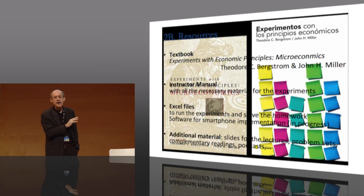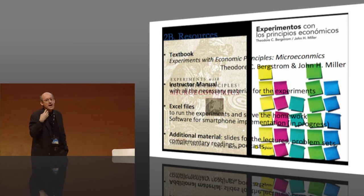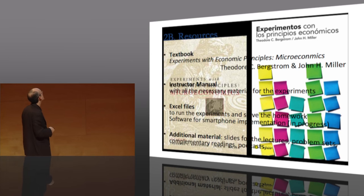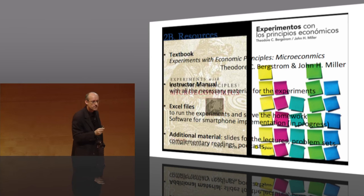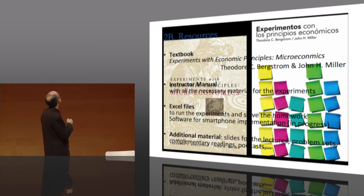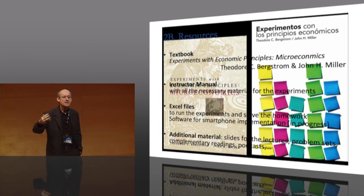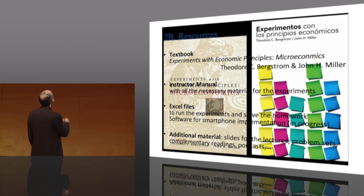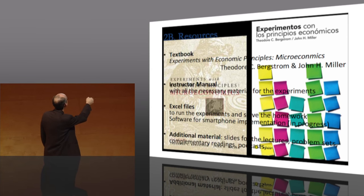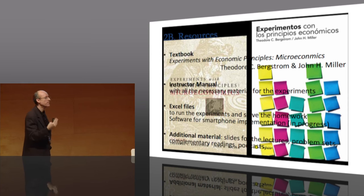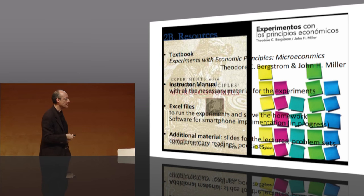What I want to convince you of is that we have a lot of material to implement this class. First, there is the textbook — 'Experiments with Economic Principles.' We use this textbook basically because it gives you the material and it's easy. I'm more interested in the methodology than in the textbook itself. It comes in English and Spanish versions. The textbook includes an instructor manual that explains in detail how to run all the experiments and provides all the necessary materials.